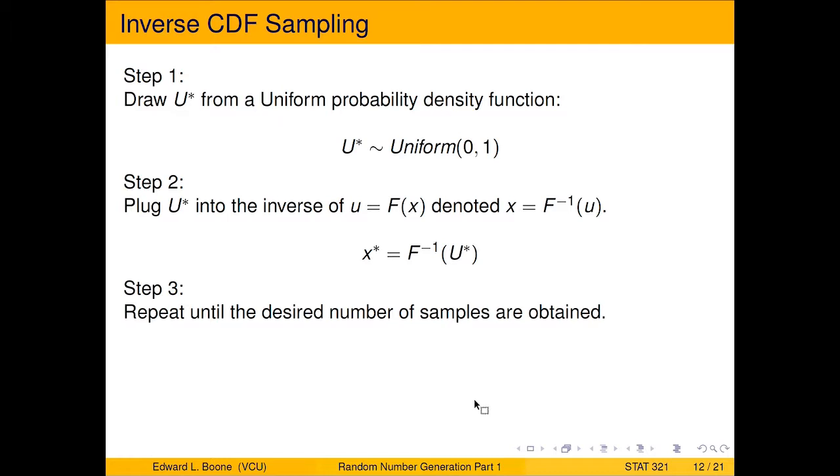Step one, we're going to draw from a uniform probability density function, and we're going to take this and we're going to plug this into the inverse of F. So we've got a cumulative distribution function, we're going to find its inverse, and we're going to plug our random draw in there. And that's going to give us a random variable or a random draw from the actual distribution that we're looking for.